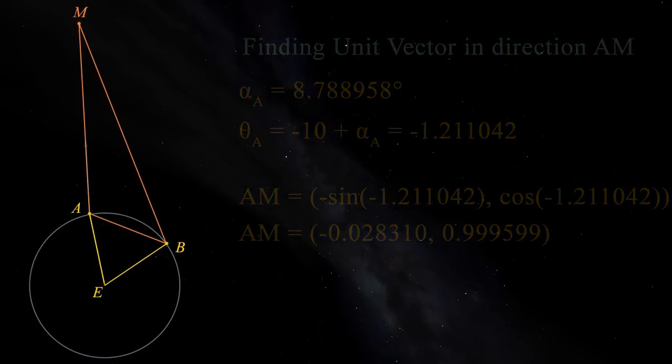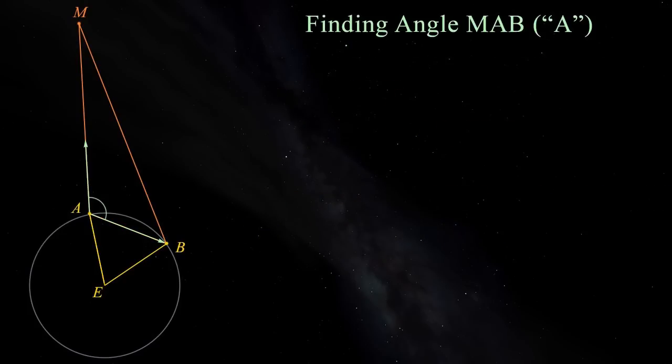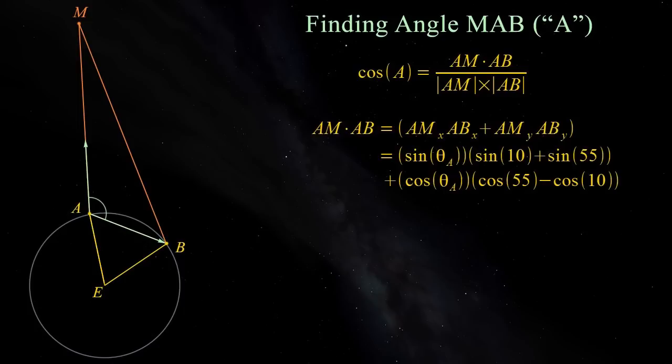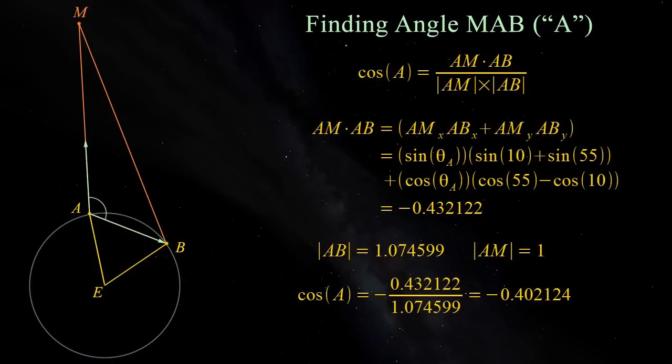We need the angle between the two vectors AB and AM, which we'll call A. The cosine of the angle between two vectors is the dot product of the two vectors, divided by the lengths of them multiplied. To get the dot product of two vectors, we just multiply like components and add them up. So AB dot AM is sin theta A times sin 10 plus sin 55 plus cos theta A times cos 55 minus cos 10. We calculated the length of AB earlier. We made AM a unit vector, so its length is 1. Plug these values in and the cosine of angle A is minus 0.402124. A therefore is 113.711042 degrees.